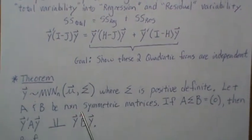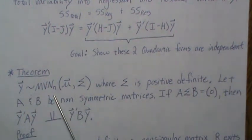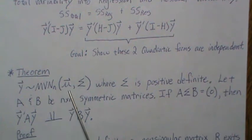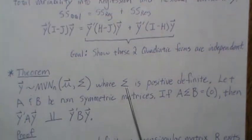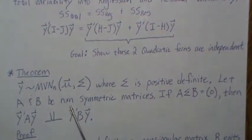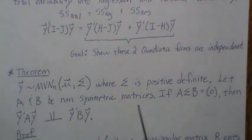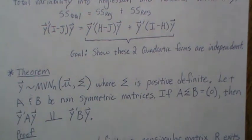If we let the vector Y be multivariate normal with length n, have a mean μ and a variance-covariance matrix Σ, and here we're going to assume that Σ is positive definite, which is a safe assumption. Let A and B be n by n symmetric matrices. If this condition is true, so AΣB equals the zero matrix, then the two quadratic forms are independent.